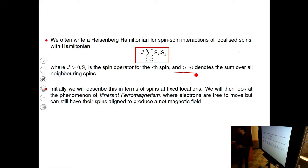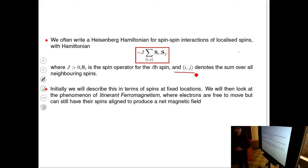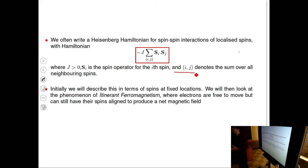In a real material, we rarely have all spins lined up in the same direction. There will be regions pointing one way and other regions pointing another way — those are called domains. Also, this model of stationary spins is very useful and describes many materials, but electrons in a conduction band have their own magnetism called itinerant ferromagnetism, arising from interactions between mobile electrons.